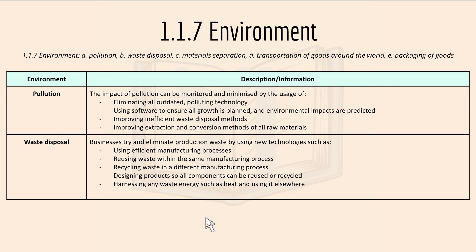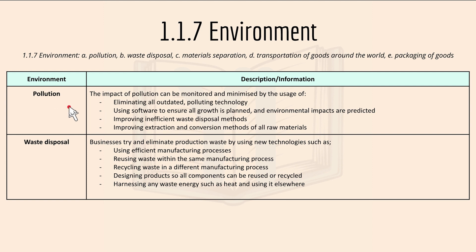For 1.1.7 environment, which includes pollution, waste disposal, material separation, transportation of goods around the world, and packaging of goods. For pollution: the impacts can be monitored and minimized by eliminating outdated pollution technology, using software to ensure all growth is planned and environmental impacts are predicted, improving inefficient waste disposal methods, and improving extraction and conversion methods of raw materials.